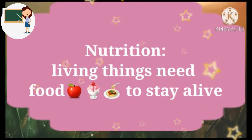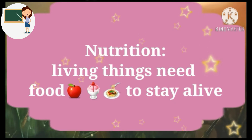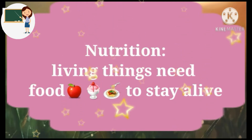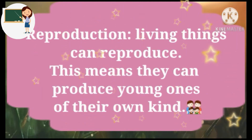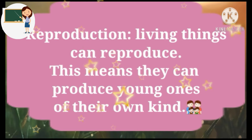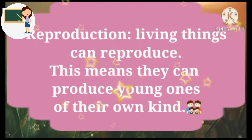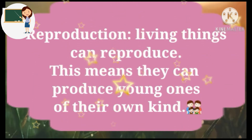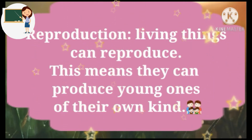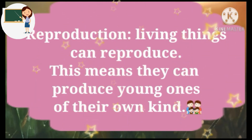Number 4 is Nutrition. In nutrition, living things need food to stay alive. Number 5: Reproduction. Living things can reproduce — this means they can produce young ones of their own kind.